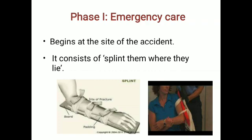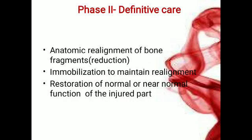Phase 1 emergency care begins at the site of the accident and consists of splinting them where they lie. Phase 2 definitive care includes anatomic realignment of bone fragments, reduction, fixation, and immobilization to maintain realignment, and restoration of normal or near-normal function of the injured part. The protocol for any fracture — general or maxillomandibular — is: reduction, fixation, immobilization, and restoration or rehabilitation.